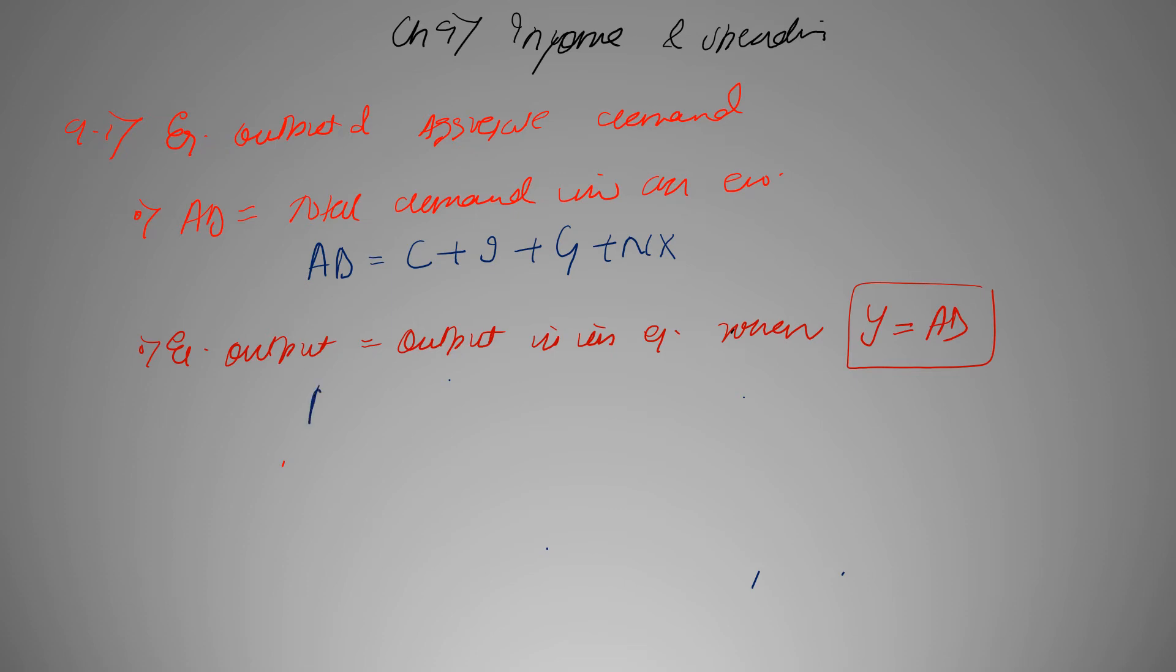So we know that AD is equal to C plus I plus G plus NX, and since Y is equal to AD, so Y is equal to C plus I plus G plus NX and this represents the equilibrium output in an economy.